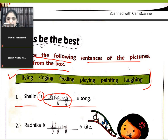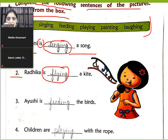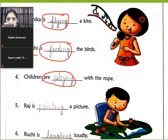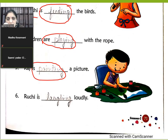The helping verb must be present, as you have already studied. 'Radhika is flying a kite.' 'Ayushi is feeding the bird.' 'Children are playing with rope.' 'Children are playing loudly' — Ruchi is laughing loudly.